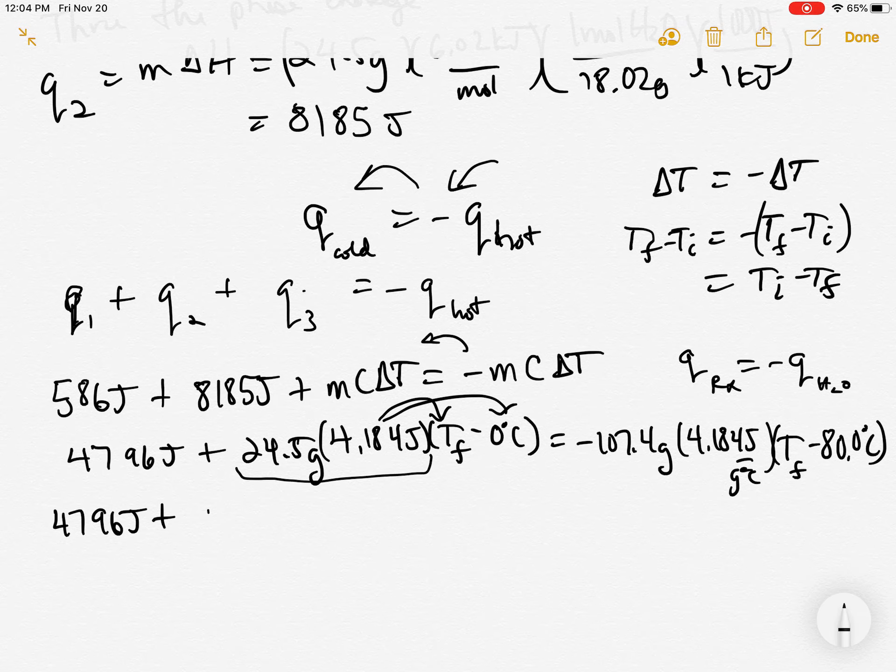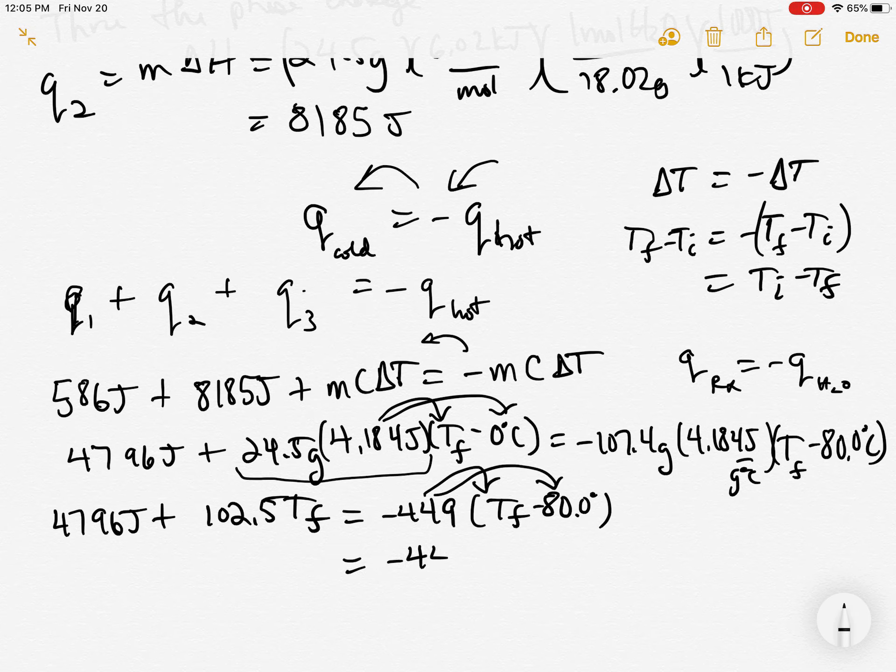So the 102.5 times zero is zero. Now I'm going to multiply the negative 107, 4.184, and that equals negative 449 times Tf minus 80 degrees. Okay. Now I'm going to distribute that number in there. So that's going to equal minus 449 Tf plus, cause I got negative times a negative, 35949.